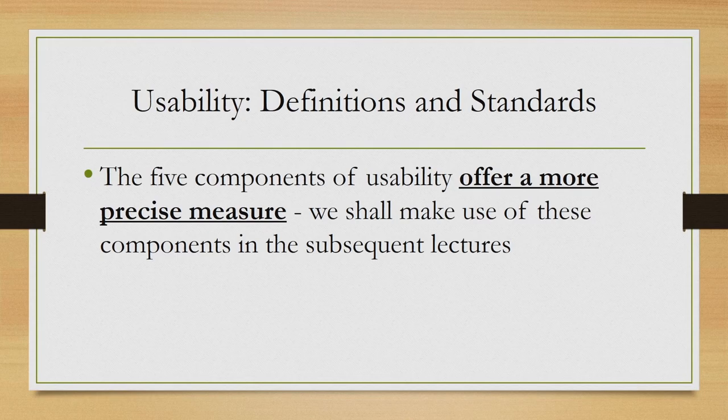To recap, we have the ISO standard definition which talks about the nature of usability — a usable product need not be designed for all, for all contexts of use, or for all sorts of tasks. Instead, a usable product is supposed to be usable only for a specific group of users working in a specific context and trying to achieve a specific set of goals. The ISO definition also mentions two measures of usability, whereas Nielsen's framework provides five measures, and we will go by Nielsen's five measures as a more precise measure of usability.